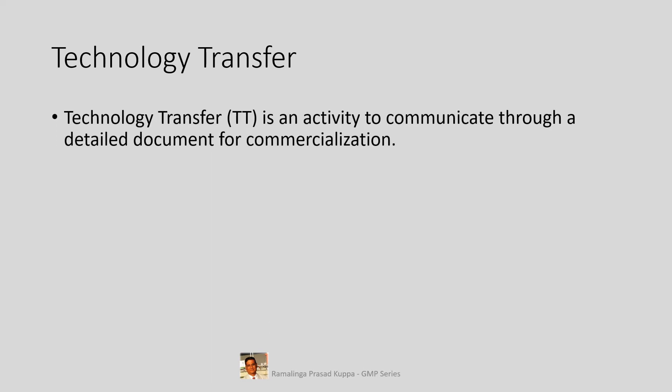Let us see what technology transfer is. Technology transfer (TT) is an activity to communicate through a detailed document for commercialization. Based on the detailed development report, the technology transfer document should be drafted. At this point it is necessary to form a group of experts from production, engineering, utility services, and any other key function of the manufacturing. This is required to understand the requirements of volume for large-scale production, suitable equipment, suitable utilities like steam requirements for heating, cooling systems, etc. Process dynamics from laboratory gram scale to commercial kilo stage have to be looked into at this stage.